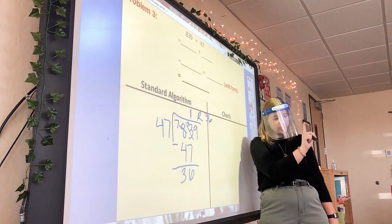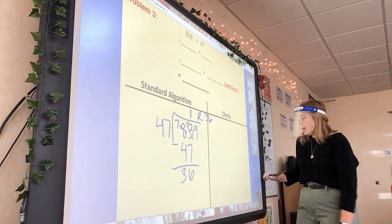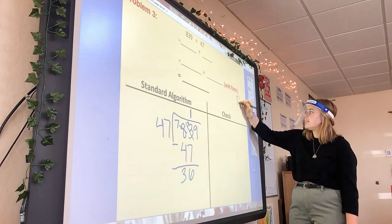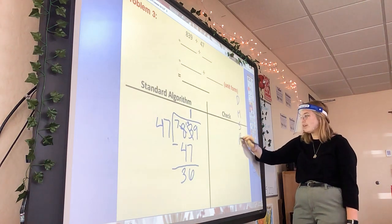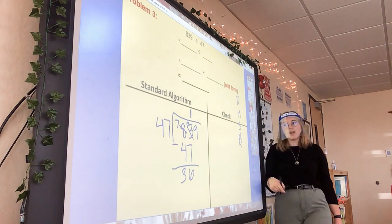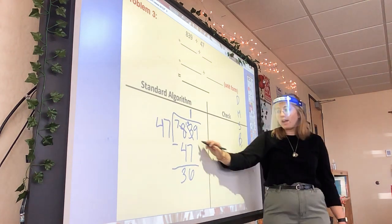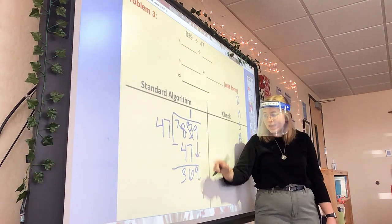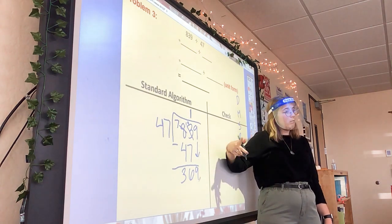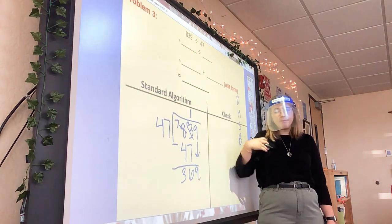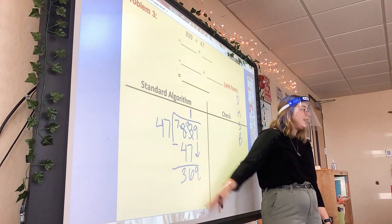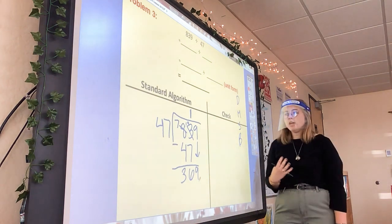Don't stop there — 47 doesn't go into 36, so you might think the answer is 1 remainder 36. Nope. After we subtract, remember Dad, Mom, Sister, Brother — what does the Brother stand for? Bring down. Don't forget about our friend the 9 — bring down the 9, and then you can keep going.